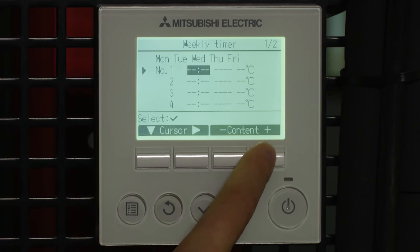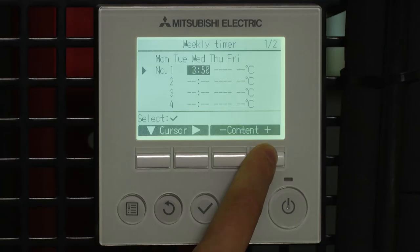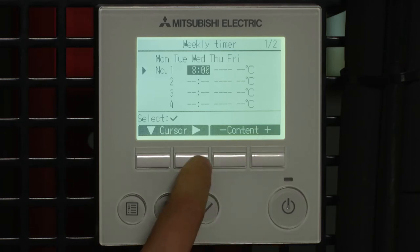Then we're going to specify what time we want things to happen. So we'll specify have the air conditioning come on at eight o'clock in the morning. It does it in five minute increments.